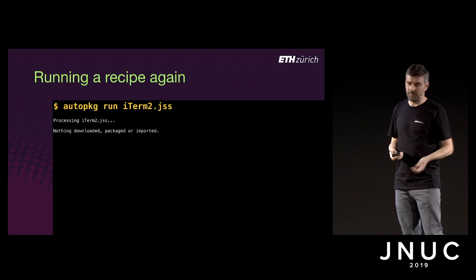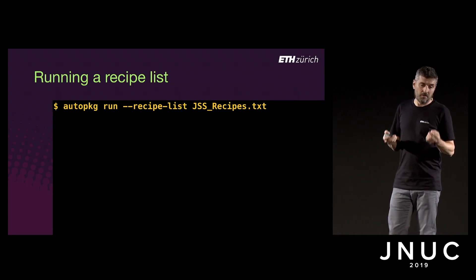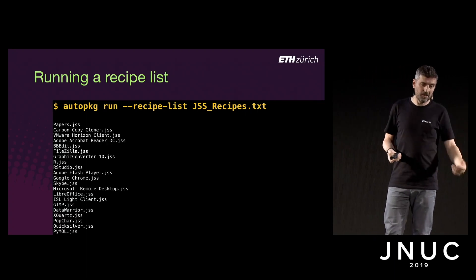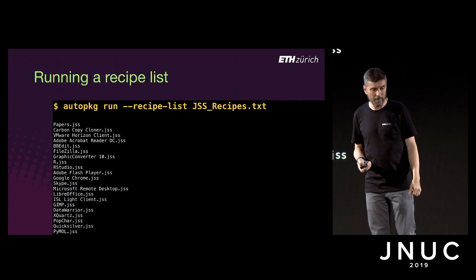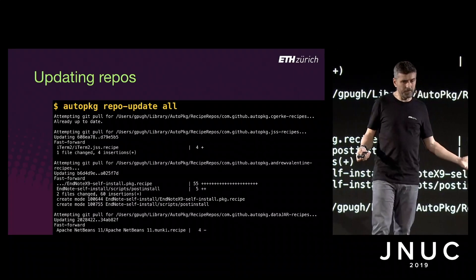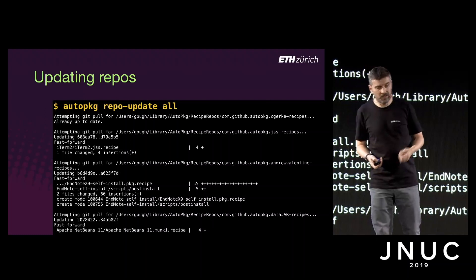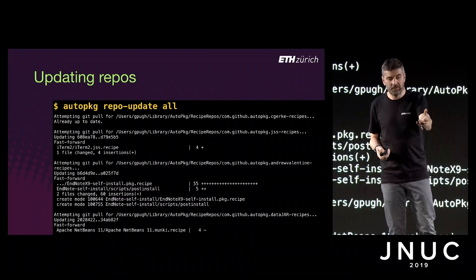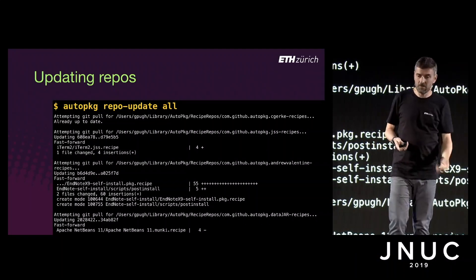You can run all your recipes at once using a recipe list file — literally a text file of all the recipes you want to run, and AutoPackage works through them all in turn. Recipes get updated over time, for instance because a source URL has changed, so you need to synchronize your local repositories with GitHub. The repo-update-all command does them all at once, showing what it's doing and whether each is up to date. Conveniently, you can see our iTerm2 .jss recipe has changed.